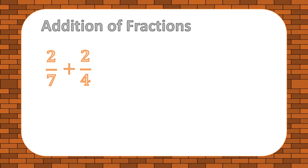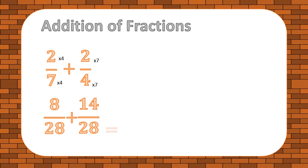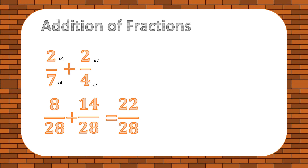Now we'll solve the addition of fractions with two different denominators. The first step is to make both denominators the same. Here we have 7 and 4 — one way to find the common multiple is to multiply by the opposite fraction's denominator, so the first fraction is multiplied by 4 and the other by 7. Once done, we simply add the numerators and keep the denominator intact, giving 22 out of 28. We can convert to the lowest term by dividing by 2, giving the answer 11 out of 14.